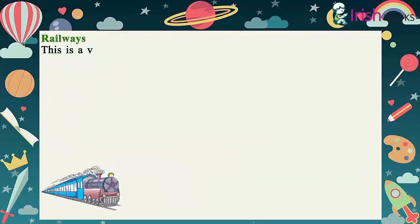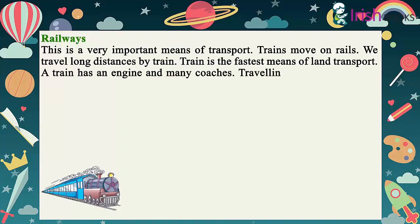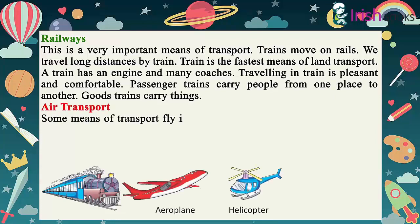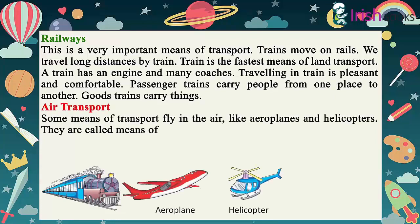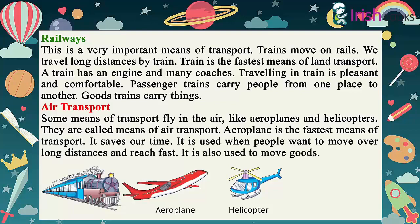Railways: This is a very important means of transport. Trains move on rails. We travel long distances by train. Train is the fastest means of land transport. A train has an engine and many coaches. Travelling in a train is pleasant and comfortable. Passenger trains carry people from one place to another. Goods trains carry things.